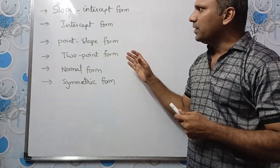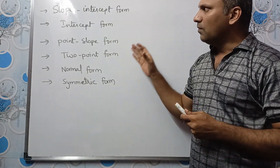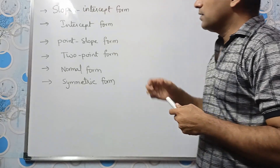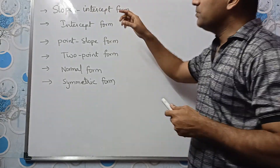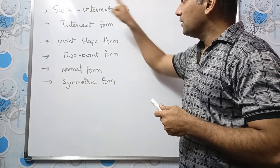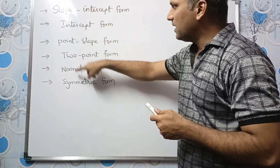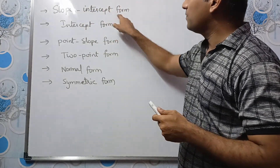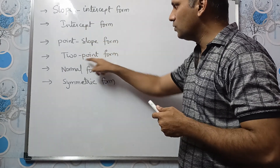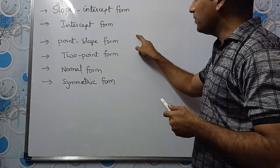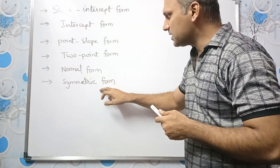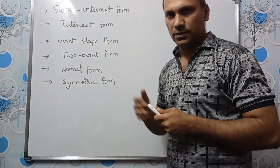In the second video, we will learn different types of equations. A straight line can be represented in different forms. We have six forms: slope-intercept form, intercept form, point-slope form, and two-point form. These four we will learn in this video, and normal form and symmetric form we will learn in the next video.